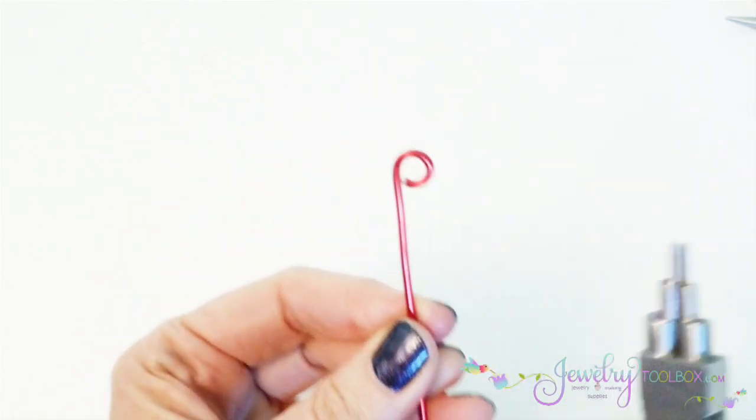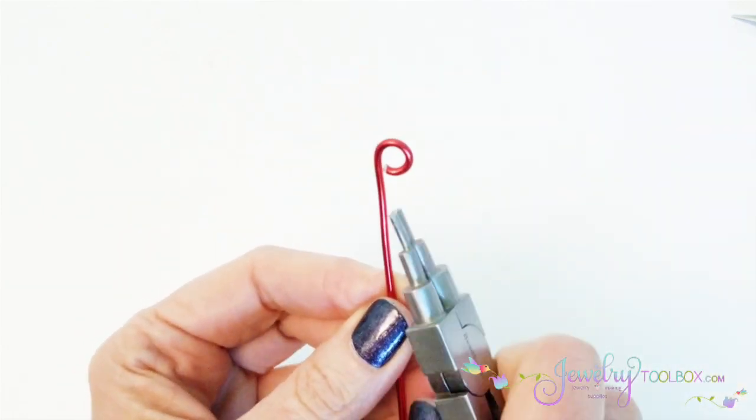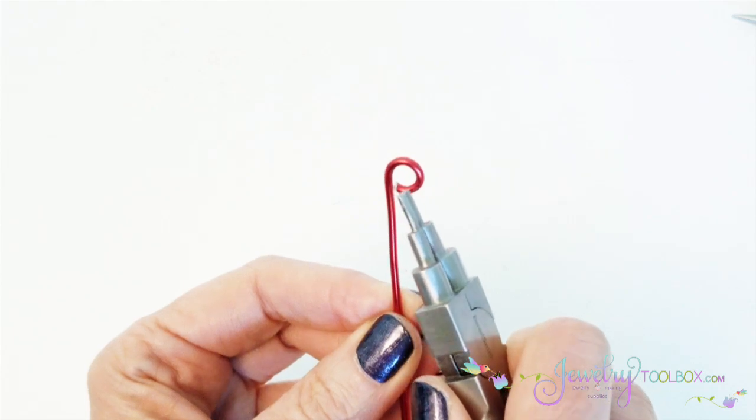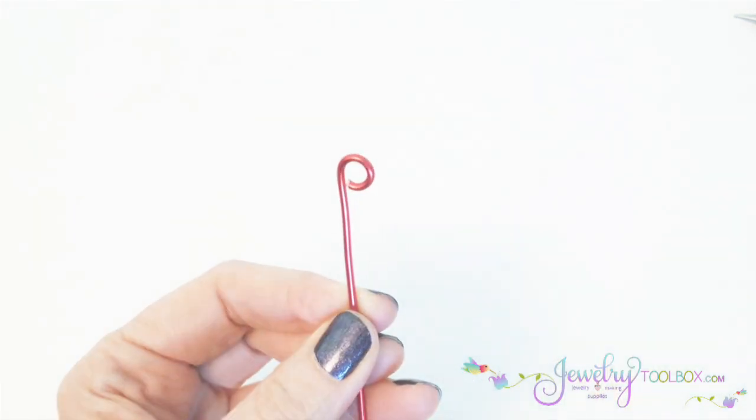Now I have a P that's got a nice rounded shape. It's got a nice round end to the loop. And that gives us the perfect P.